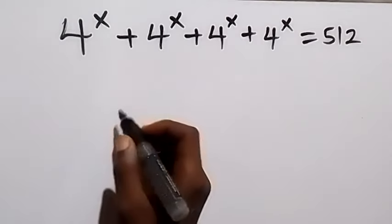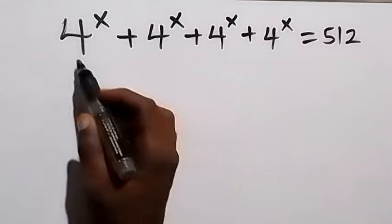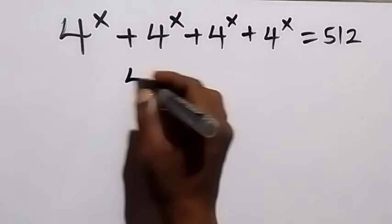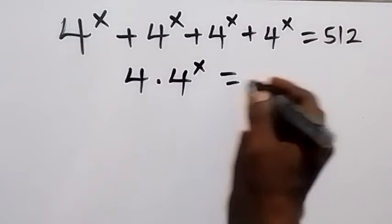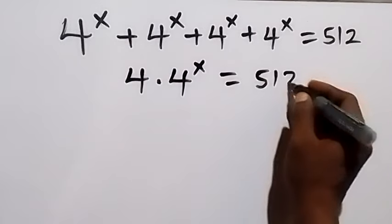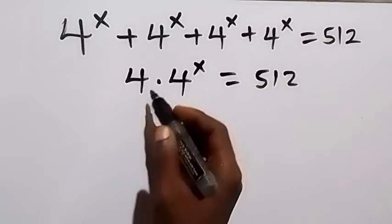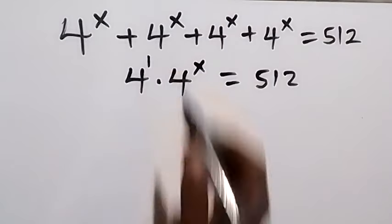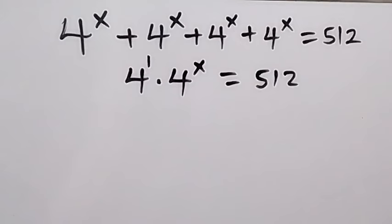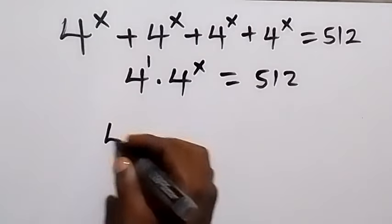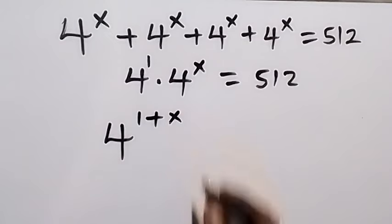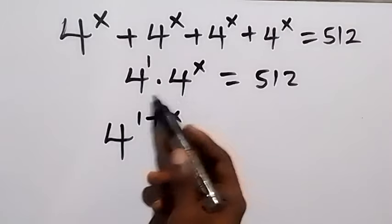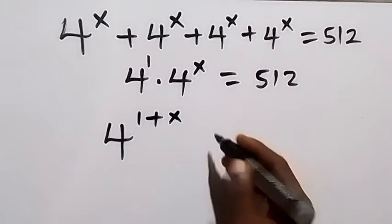From here, we can write this again. We have 4 of these, so we have 4 times 4 to the power x equals 512. And then the 4 here can be written as 4 to the power 1. From the law of indices, we can write this again as 4 to the power 1 plus x, because when the same base is multiplied, we add the powers.